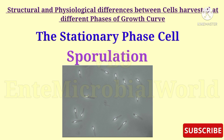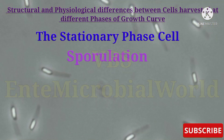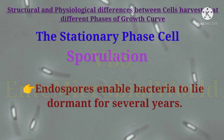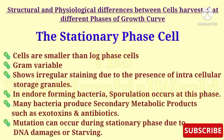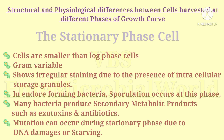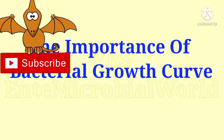Sporulation usually occurs in gram-positive bacteria, for example Bacillus. Endospores are formed in response to unfavorable growth conditions. In the stationary phase, many bacteria also produce secondary metabolic products such as exotoxins and antibiotics. Mutation can also occur during the stationary phase due to DNA damage or starvation.